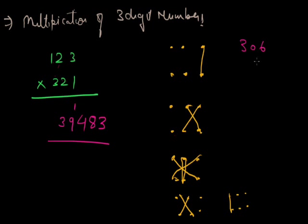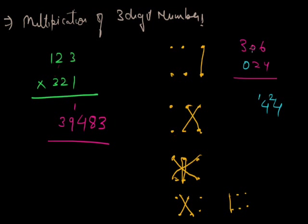Let me also solve 306 times 24. Making it a 3-digit multiplication by writing 24 as 024: 6 times 4 is 24 — write 4, carry 2. Then 6 times 2 plus 0 times 4 is 12 plus 2 carry is 14 — carry 1. Then 3 times 4 plus 0 times 2 is 12 plus 1 carry is 13 — carry 1. Then 3 times 2 is 6 plus 1 carry is 7. Answer: 7344.